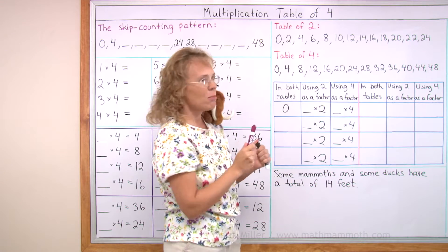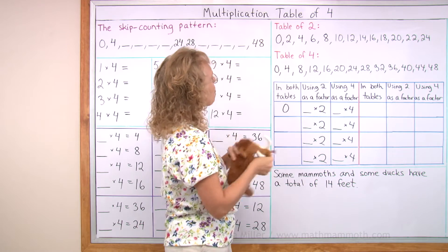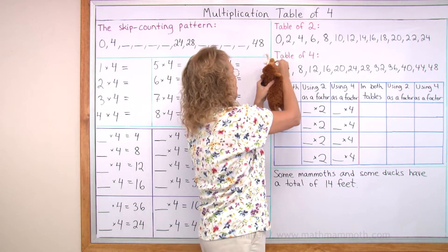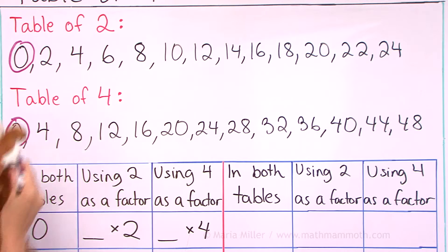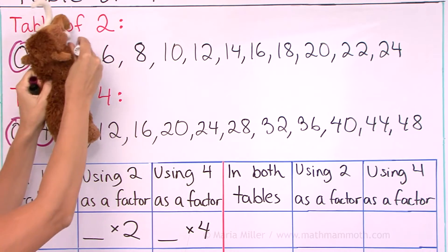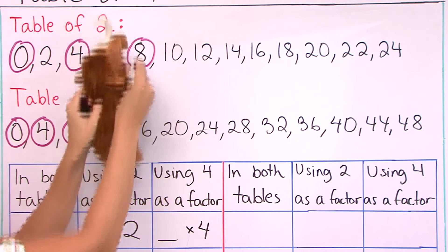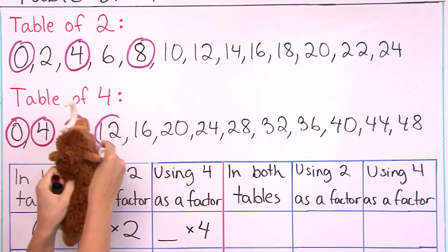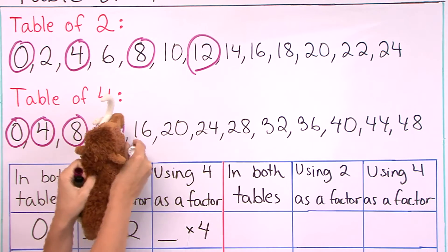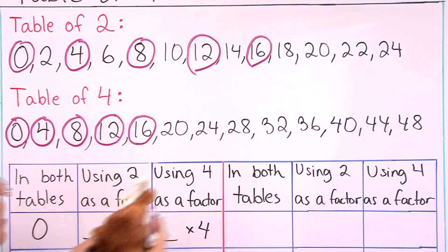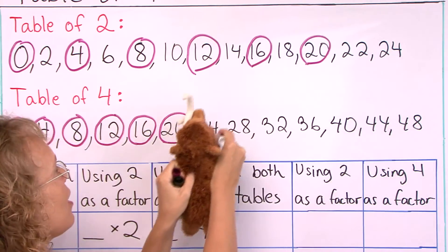Now we're going to find what numbers are the same in both lists. Matthew, that's going to be your task. There's 0 in both lists, right? So you go circle that. And then what else is in both lists? 4 is, and then 8 is there too, and 12 is there too. Looks like we're seeing a pattern here — he's circling every number in the table of 4 and every other number in the other.